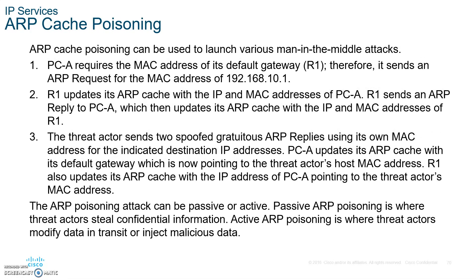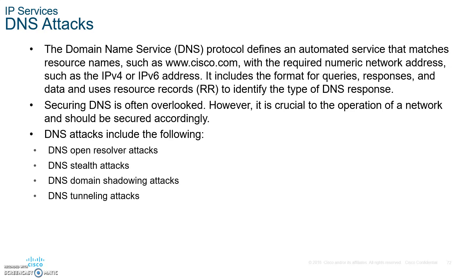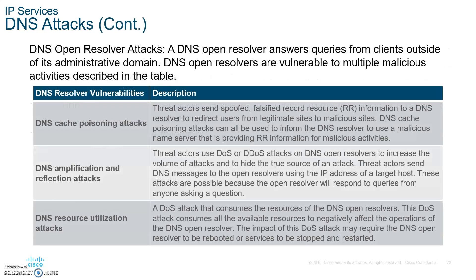The ARP cache stores IP-to-MAC mappings in memory, but those can be changed — that's ARP cache poisoning. ARP poisoning can be passive, where the attacker steals confidential information, or active, where the attacker modifies data in transit or injects malicious data. DNS attacks include DNS cache poisoning, DNS amplification, and DNS utilization attacks — remember, DNS resolves IP addresses to names.